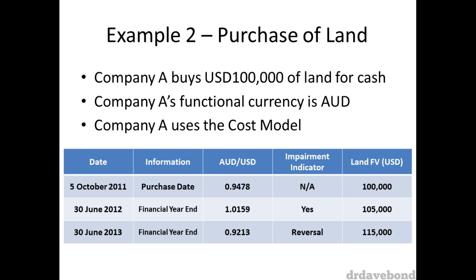There is also information available that the land was impaired on the 30 June 2012 and that there was a reversal on the 30 June 2013. The AUD/USD exchange rate has fluctuated over that period of time and the US dollar value of the land increased from $100,000 on purchase to $115,000 on the 30 June 2013.